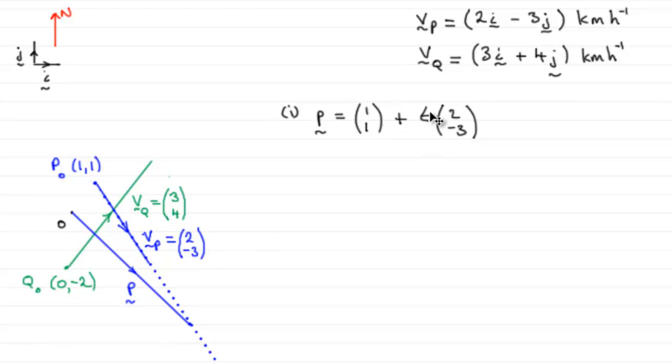So, it'll just be 1,1 plus 1 lot of 2 minus 3. After two hours, what would be the position vector of P? Well, after one hour, it'll be here. After two hours, it would be at about this point here. So, it'd be up there, 1,1 plus 2 lots of this vector, 2 minus 3, and so on. So, that's the general rule of how you find the position vector of something after a time t. Go to the starting point and then t lots of your velocity vector.